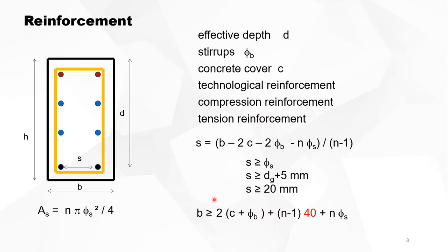You should always check the total width of the beam, so if all your reinforcement is placed in one layer, check if all the reinforcement can fit in. It's a very simple equation — this is why I take this as a fixed value, otherwise it becomes too complicated. The reinforcement area for equal diameters is always the number of bars times π times diameter squared divided by 4 — simply the area of a circle.